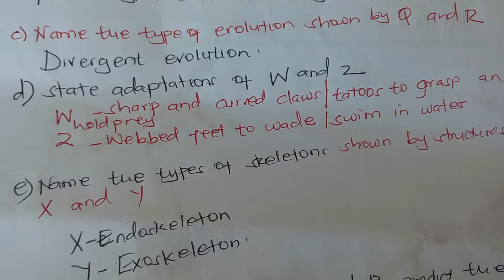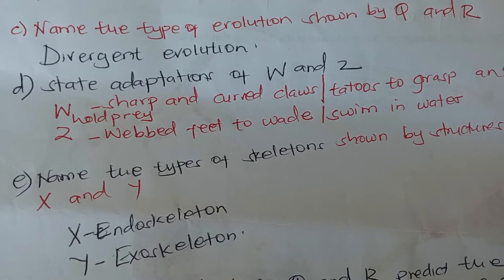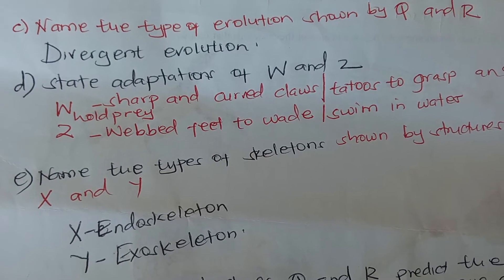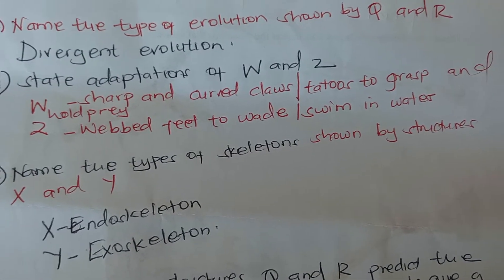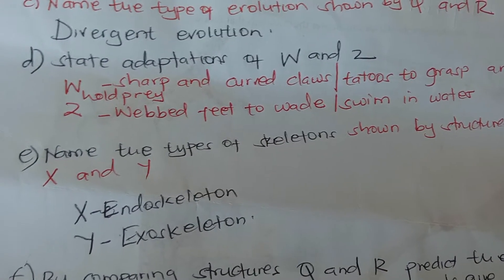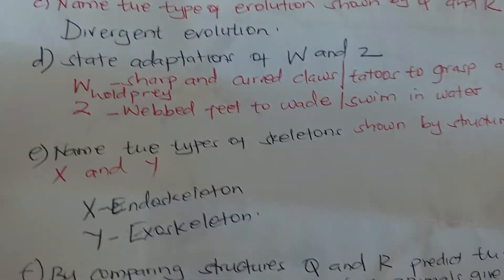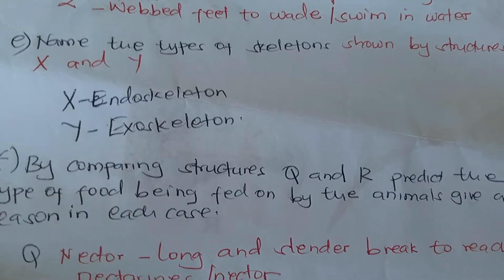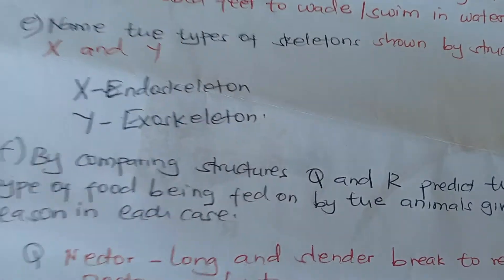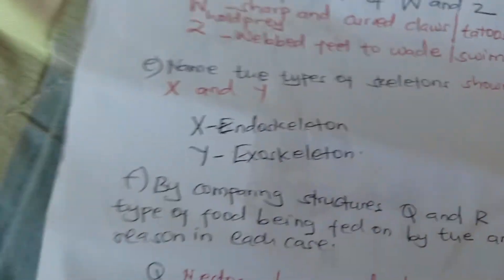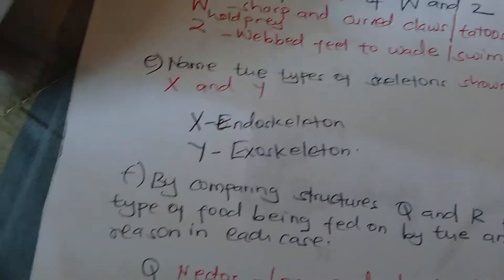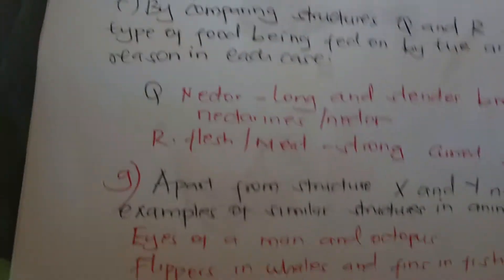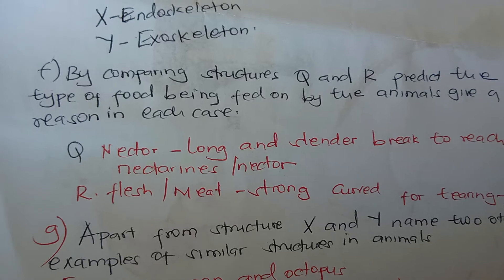The type of evolution shown by Q and R is divergent evolution. Adaptations of W and Z: W has sharp curved claws to grasp and hold prey, while Z has webbed feet to enable swimming in water. X shows an endoskeleton and Y shows an exoskeleton.